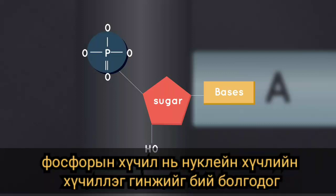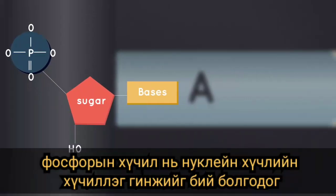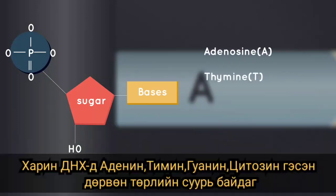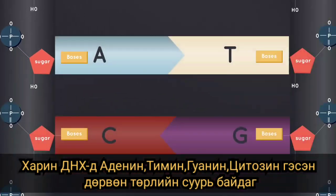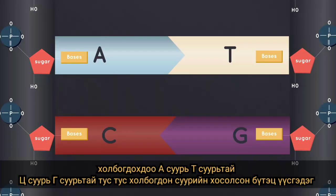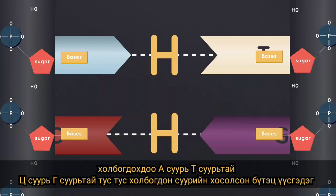When people think of DNA they usually think of these bases. There are four bases: adenine, thymine, cytosine and guanine. But just remember A, T, C and G. It is best to remember them in this order — A, T, C, G — because A and T bases pair up, and C and G bases pair up. The bases pair up forming hydrogen bonds.